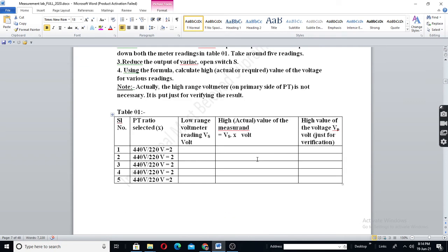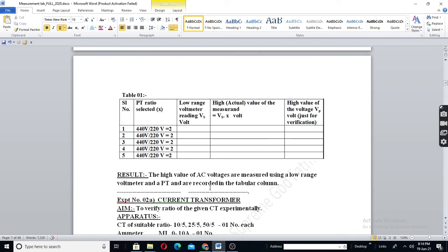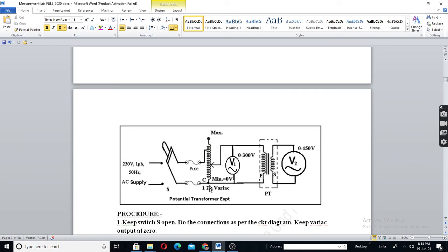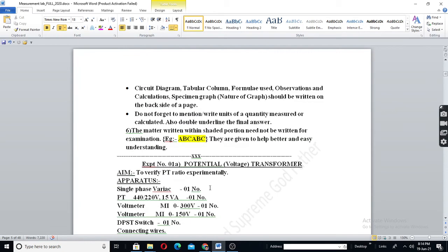Both are same table. I have written 2 times. And in your syllabus, there is no 1A. See, in 1A, you are just verifying the PT ratio. Finding the ratio of PT. Just what you have done in your transformer experiment. Finding voltage ratio of a transformer. You have already done this.